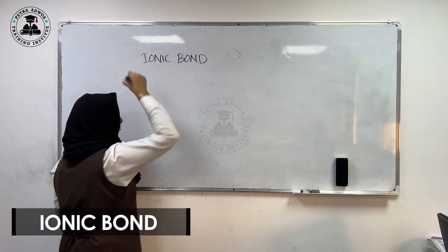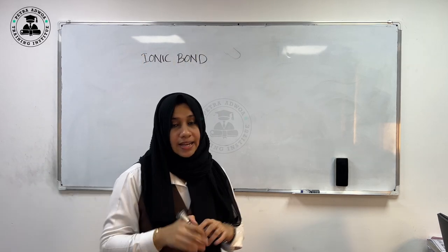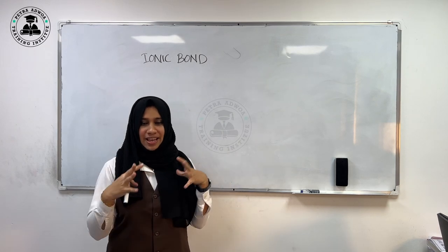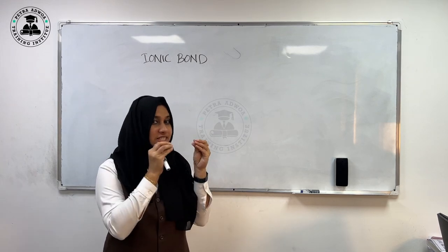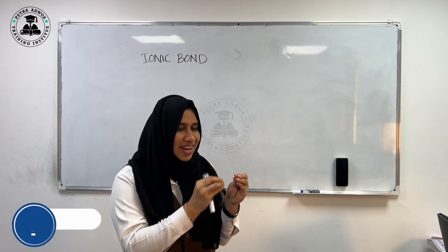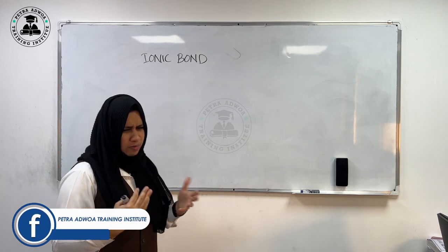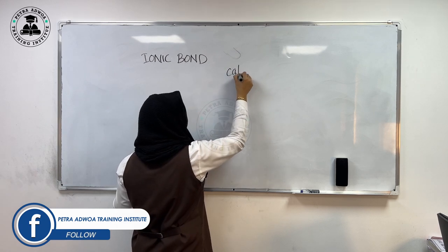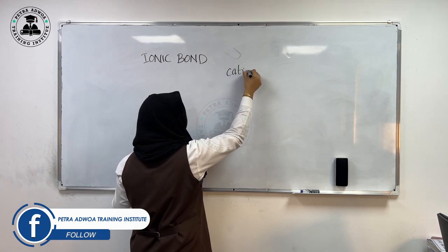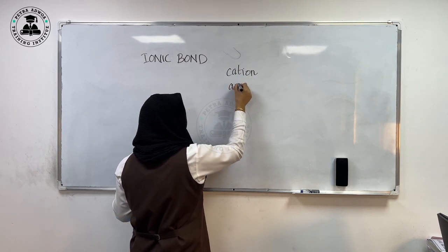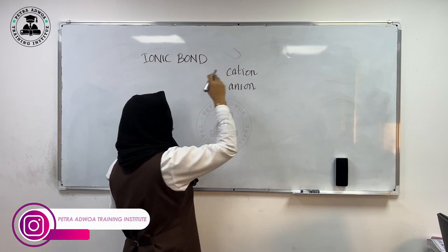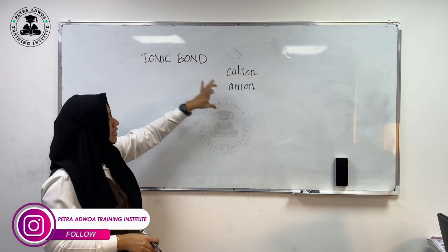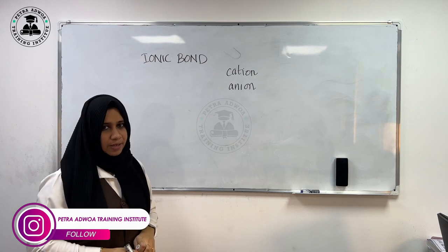An ionic bond is a strong electrostatic force of attraction between two ions — a positively charged ion and a negatively charged ion. A positively charged ion is known as a cation and a negatively charged ion is known as an anion. So the strong electrostatic force of attraction between a cation and an anion is known as an ionic bond.